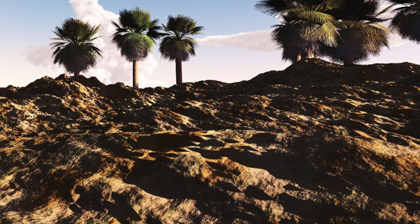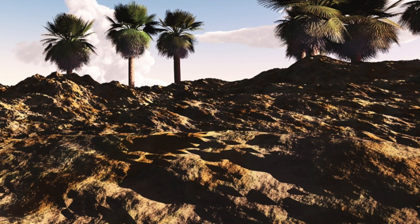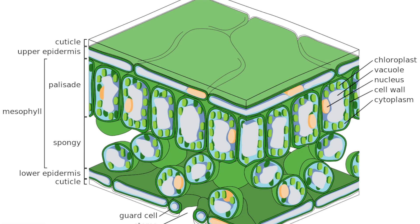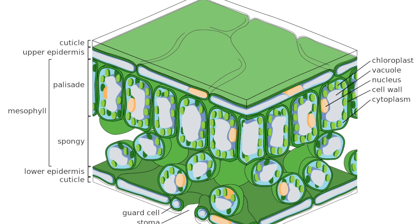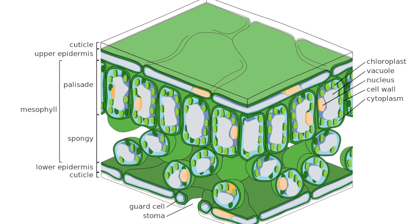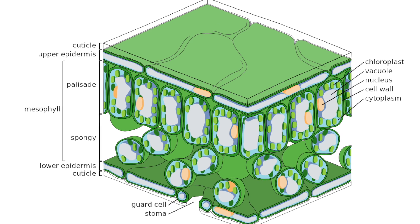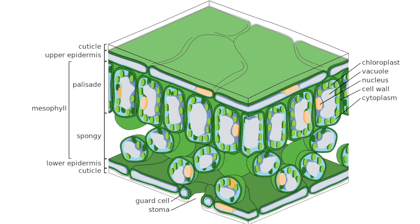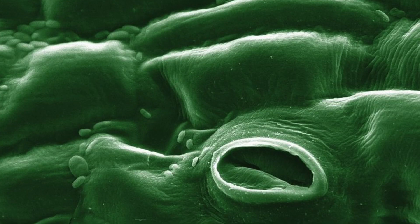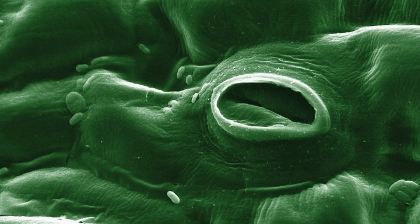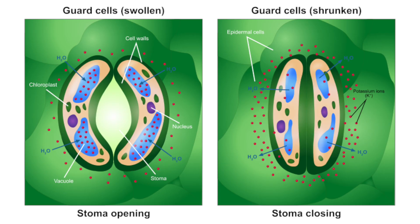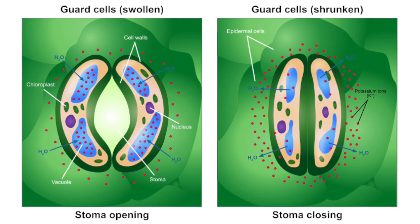Plants are able to control transpiration as well. Most leaves have a waxy cuticle in order to prevent unnecessary water loss. For example, in a hot environment the cuticle will most likely be thick and shiny. Most of the stomata are also found on the underside of a leaf, which protects them from direct sunlight, and they also have guard cells so that they can close themselves.